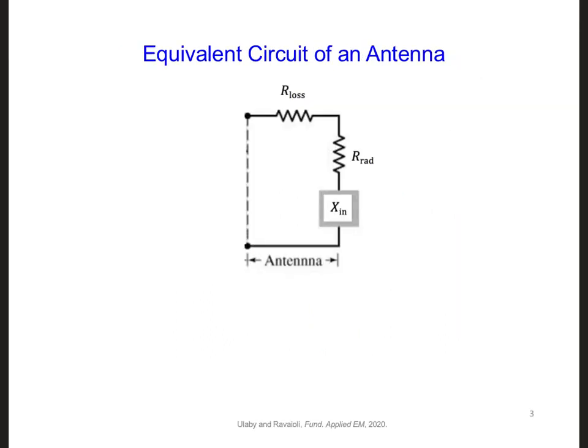We started to consider an equivalent circuit for the input impedance of an antenna. We discussed that at resonance, which is when an antenna radiates or receives the most power, R rad is largest and the reactance, X in, is the smallest, so that goes to zero.